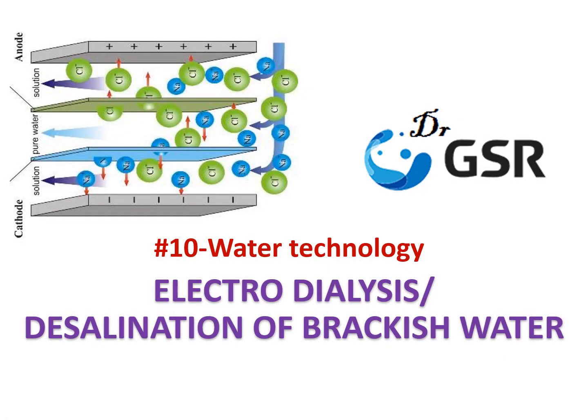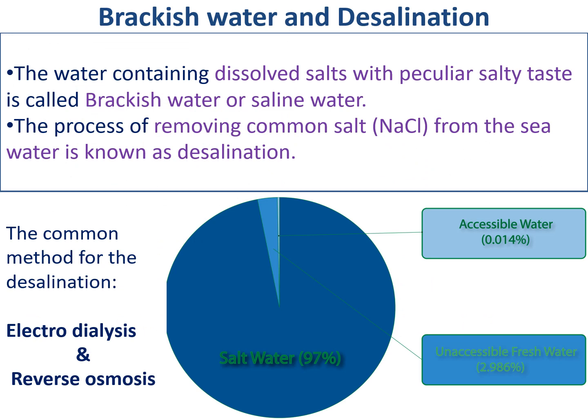Hi guys, welcome to my channel. Today's topic is electro dialysis, which explains the desalination of brackish water. This is the 10th video of water technology. We all know most of the water available around us is salt water — 97% of water on Earth is sea water. The high percentage of salt-containing water is called brackish water, and the removing of salt from salt water is called desalination. There are two methods: electro dialysis and reverse osmosis.